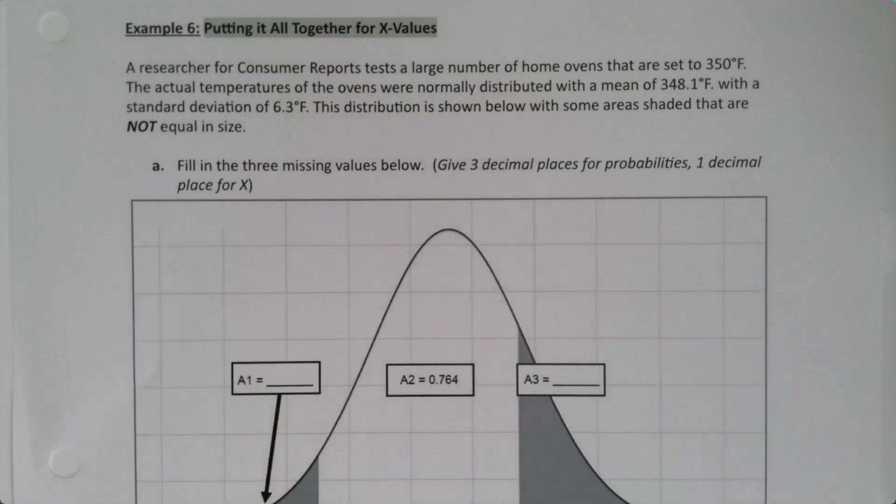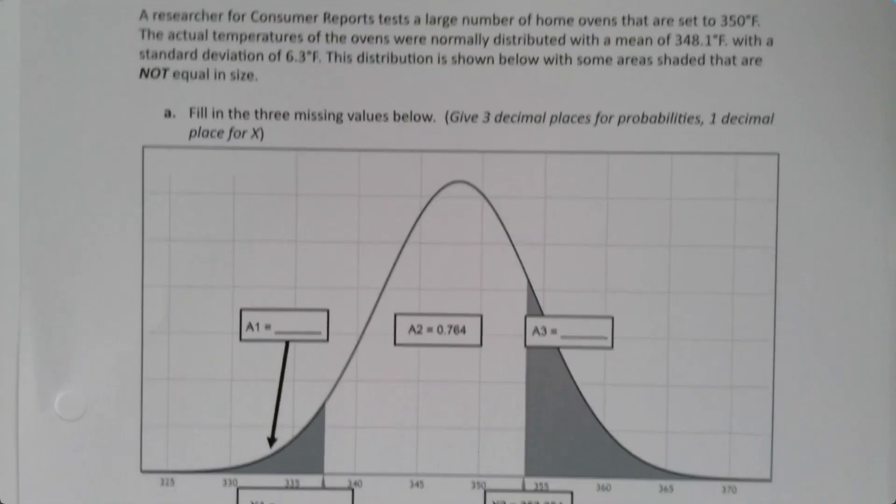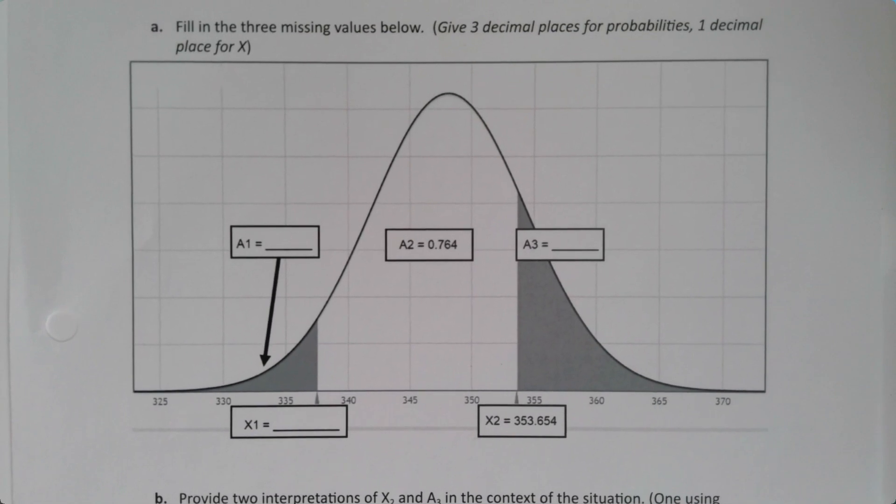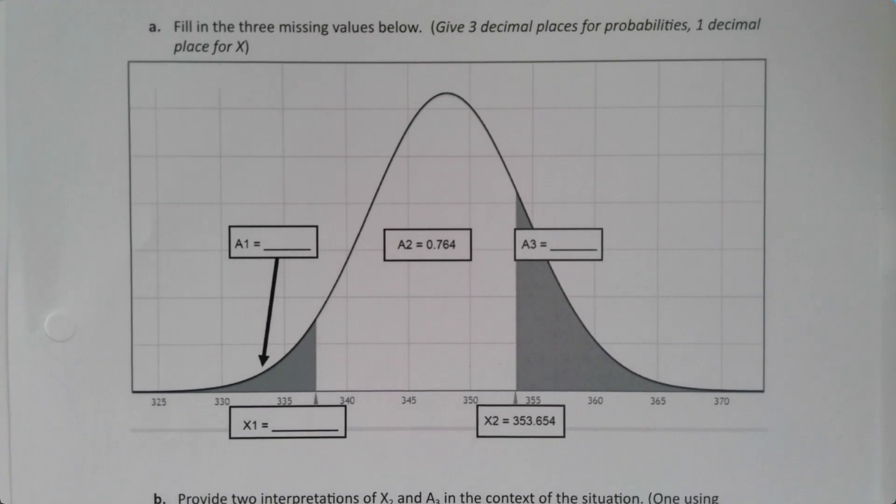This distribution is shown below with some areas shaded that are not equal in size. The reason I'm telling you it's not equal in size is because I don't want you to try to use symmetry, which is what we did in 7.1. We're actually using StatCrunch to do this. I've given two values that are just known and given in the problem and we have to find the remaining three.